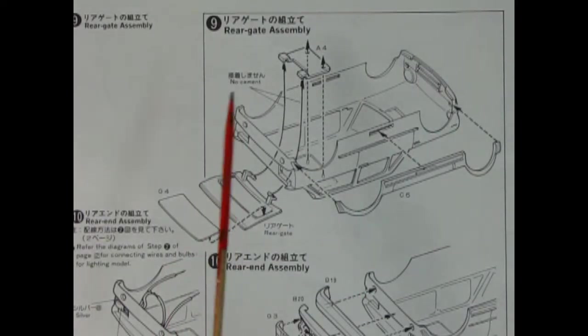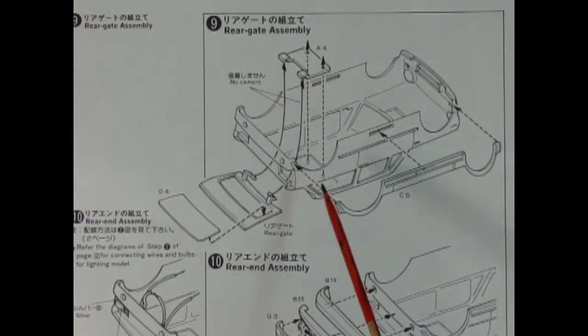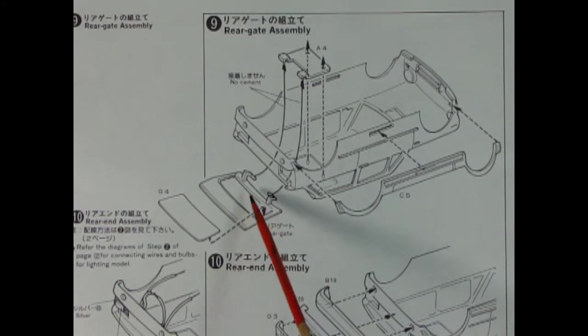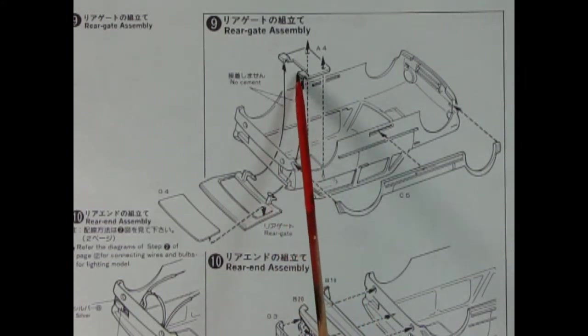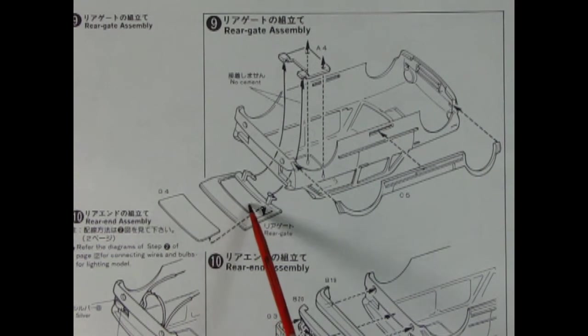Step nine is the rear gate assembly. Here we have the upper part of our hinge which will glue onto the roof of the car. You want to make sure that your rear gate is in place before this goes down because these little u-shaped hooks hook into the little pins on our hinge. Then you end up gluing in the rear window and here's the side body moldings.